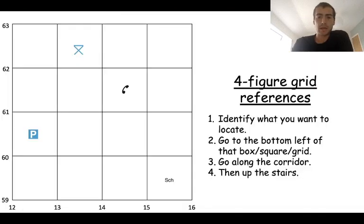So just a bit of a recap then. So remember four figure grid references, you need to follow this sequence: identify what you want to locate, go to the bottom left corner of that box, go along the corridor then up the stairs.